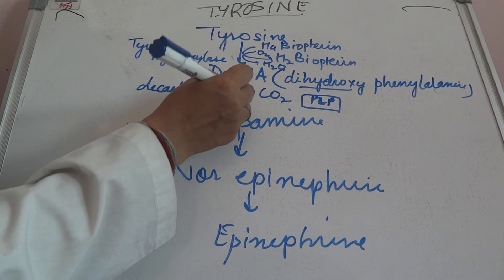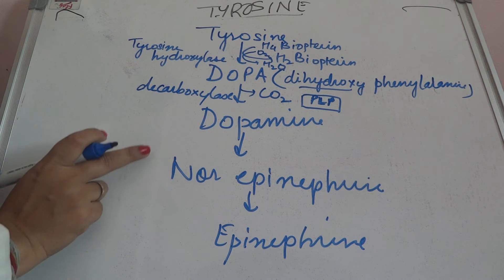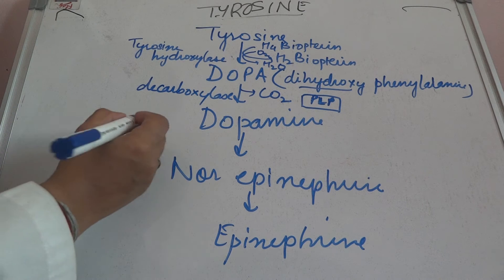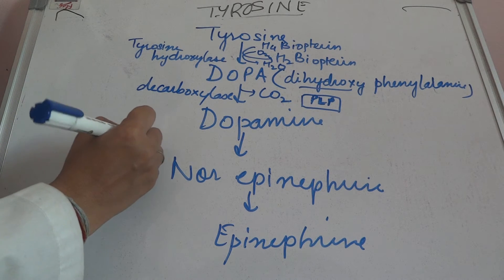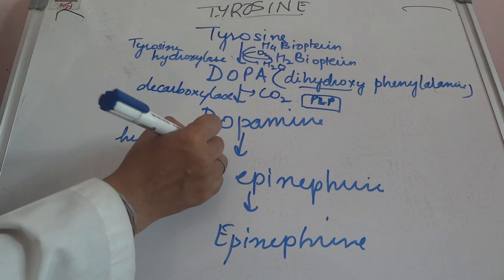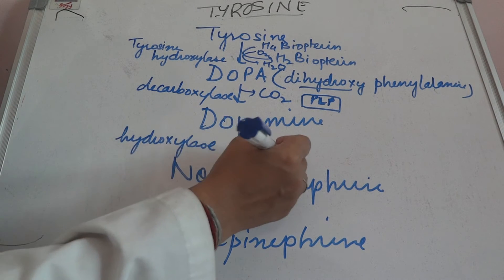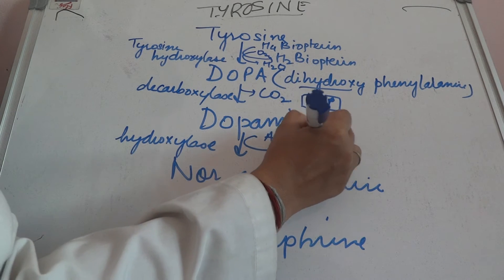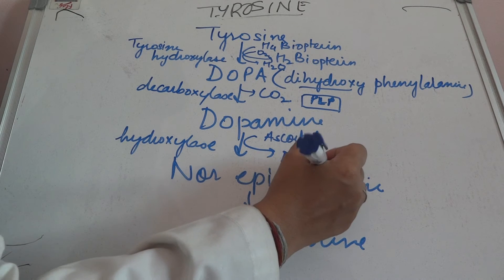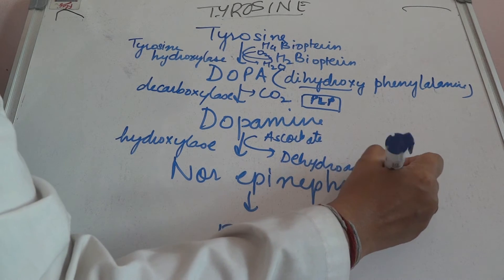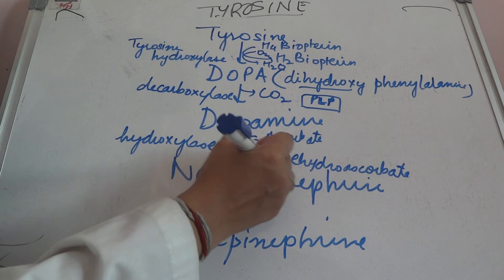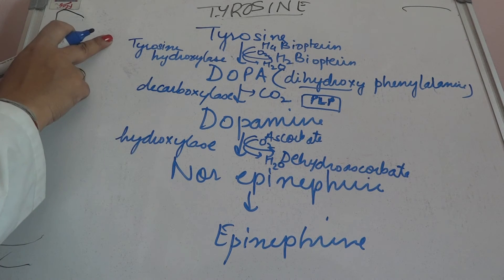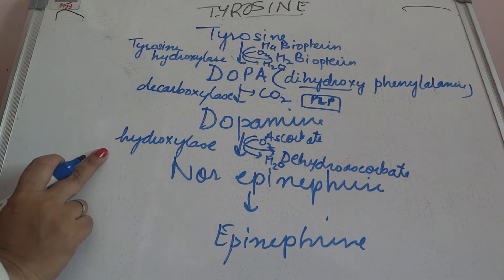Now coming to dopamine to norepinephrine: it is again a hydroxylation reaction, so the enzyme is hydroxylase. This hydroxylation reaction requires ascorbate, which is converted to dehydroascorbate. Again, because it is a hydroxylation reaction, oxygen is also required.